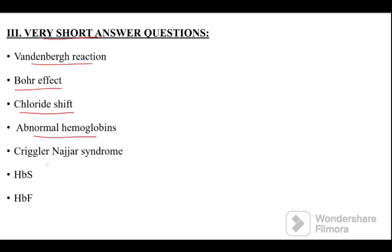abnormal hemoglobins, Criggler-Najjar syndrome, again HbS and HbF which are type of normal and abnormal hemoglobins. So potentially almost all the questions are very much important in hemoglobin chemistry and hemoglobin metabolism chapter in view of the university examinations.